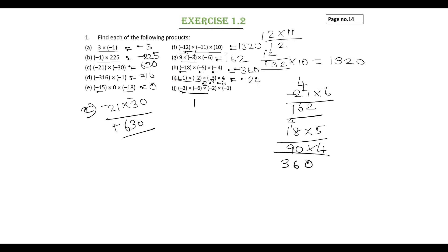J subdivision, minus 3 into minus 6 is 18, 18 into minus 2 is minus 36, minus 36 into minus 1 is 36.